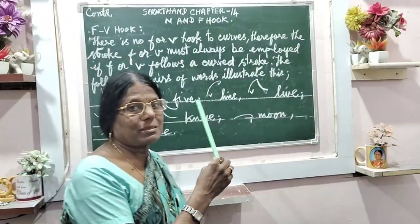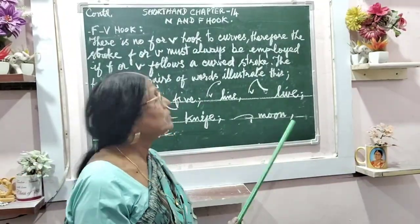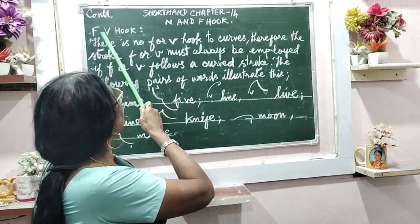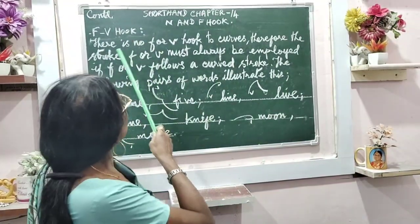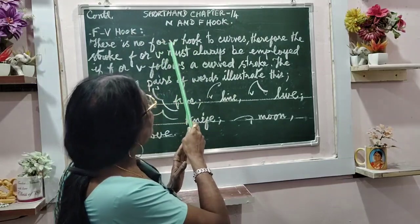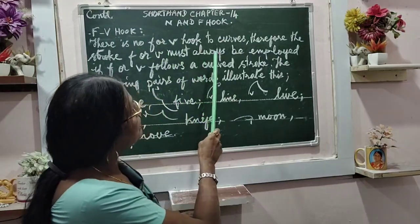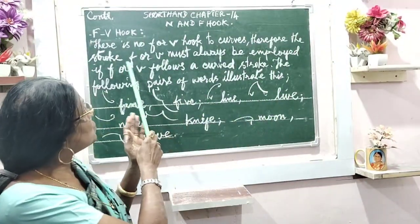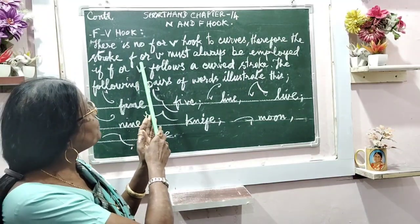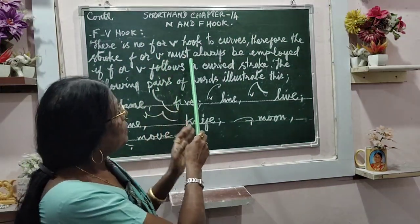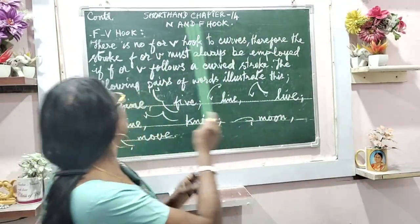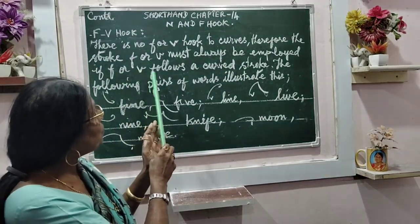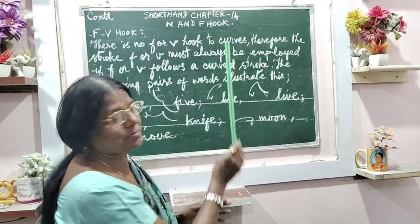This guidelines video is regarding the F and V hook. There is no F or V hook to curves. Therefore, the stroke F or V must always be employed if F or V follows a curved stroke.